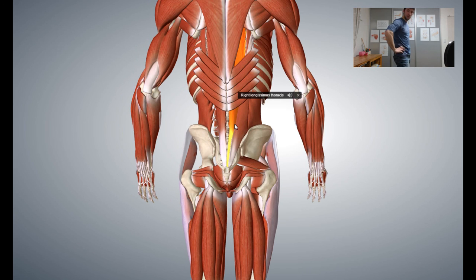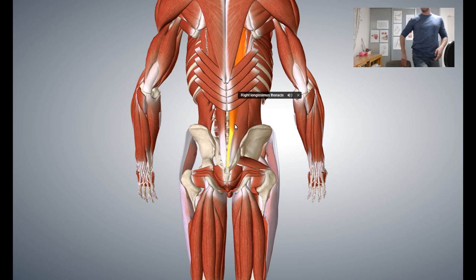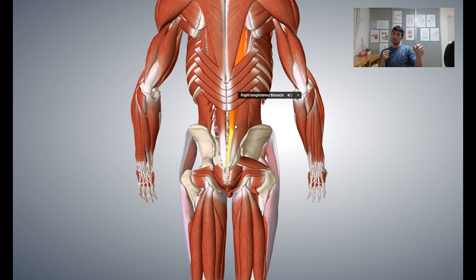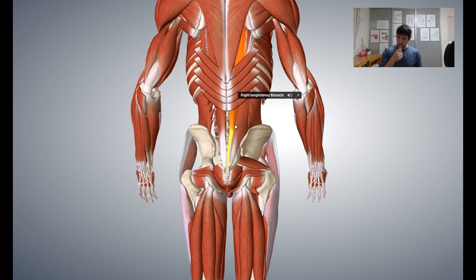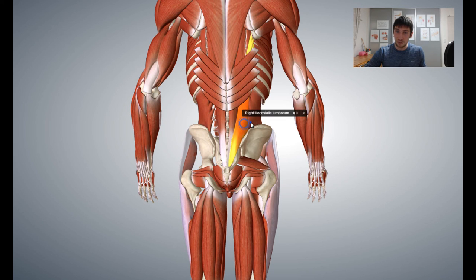With a weak AOS, the pelvis is going to tilt towards the front and these muscles will be short. Part of the solution is strengthening, part is stretching — both sides of the anterior oblique system — and also stretching the lower back muscles primarily.